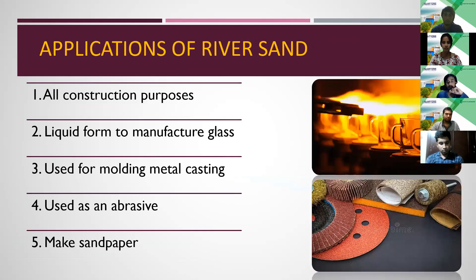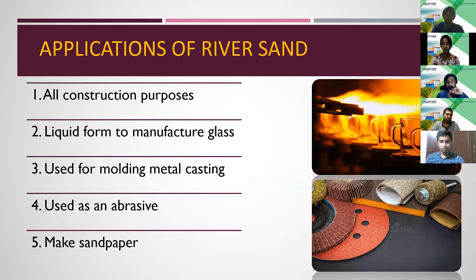Ever since the history of the construction industry began, river sand has been used as a major building material component. The applications of river sand include all kinds of civil engineering constructions, liquid form for manufacturing glass, use in modeling metal casting, use as an abrasive, and in the making of sandpaper.